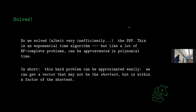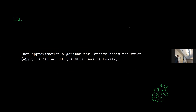The shortest vector problem has an exponential-time algorithm — n to the O(n), which is different from O(n). It can be approximated, which is very cool. An important takeaway for crypto: whenever you have a problem that is NP-hard or exponential-time, you can usually build some form of cryptography from it. This is one of those cases — it's easy to make a lattice given the basis, but very hard to find the shortest vector. The approximation algorithm is called LLL.